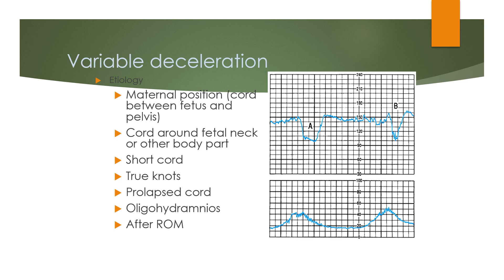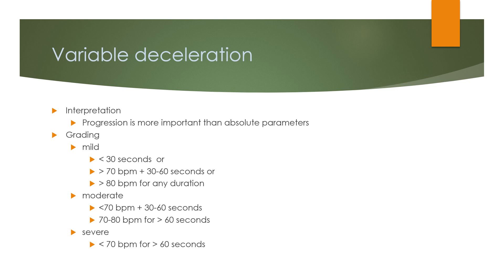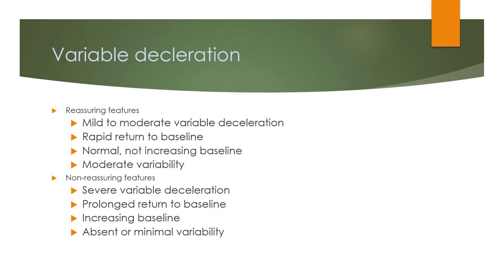Etiology of variable deceleration includes maternal position, cord between the fetus and pelvis, cord around the fetal neck or other body parts, short cord, true knots, prolapsed cord, oligohydramnios, and after ROM. Interpretation: mild is less than 30 seconds; moderate is 70 to 80 beats per minute for 30 to 60 seconds or more than 80 beats per minute for any duration; severe is less than 70 beats per minute for more than 60 seconds. Reassuring features include rapid return to baseline, normal or increasing baseline, and moderate variability. Non-reassuring features include severe variable deceleration, prolonged return to baseline, increased baseline, or absent/minimal variability.